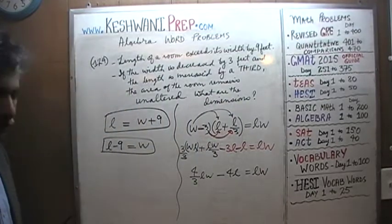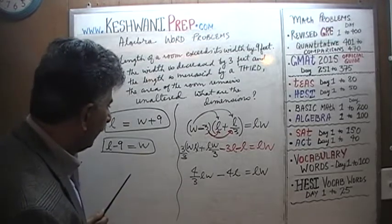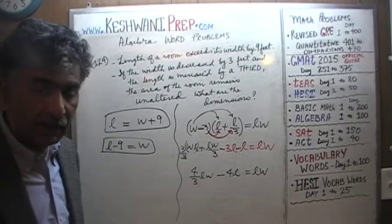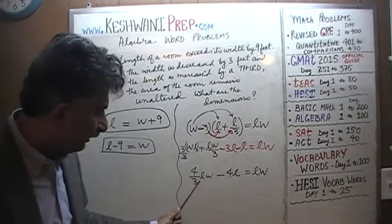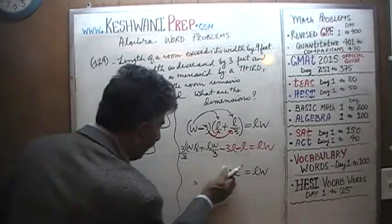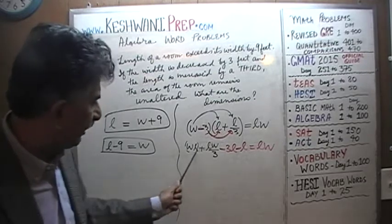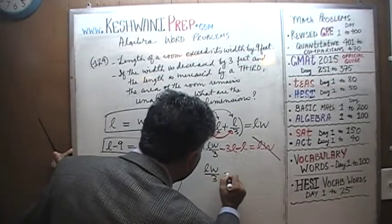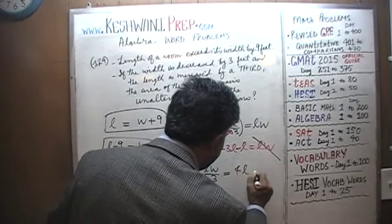Are you still with me? It's very important that you pay attention. Now, we see L times W on both sides — let's subtract LW from both sides. We end up with LW over 3 equals negative 3L minus L, which is negative 4L. Bringing 4L to the other side gives us LW over 3 equals 4L. We see L on both sides — divide both sides by L. L drops out, and we get W over 3 equals 4.